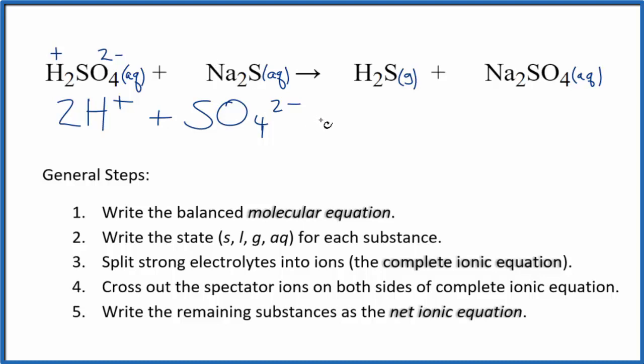The sodium - sodium's in group 1, and it's also going to be 1+, and the sulfide ion, that's 2-. So we'll have two sodium ions, and then we'll have the sulfide ion, that S2-. These are the reactants in our net ionic equation.